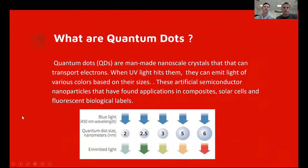So what are quantum dots? Quantum dots are man-made nanoscale crystals that can transport electrons. When UV light hits them, they emit light of various colors based on their sizes.